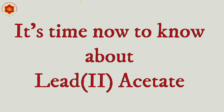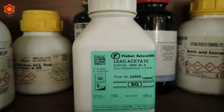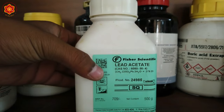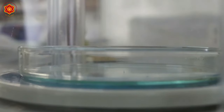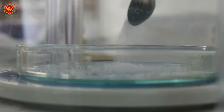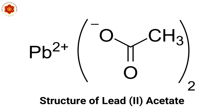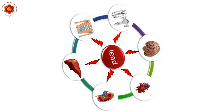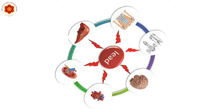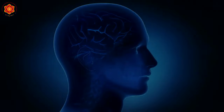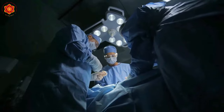It's time now to know about Lead Acetate. Lead Acetate, also known as Lead Sugar, is a white crystalline chemical compound with a slightly sweet taste. It is a toxic substance. Some of the potential harmful effects of Lead Acetate are neurological damage, gastro-intestinal problems, kidney damage, anemia, and cancer.